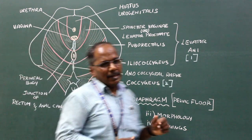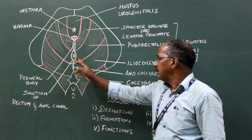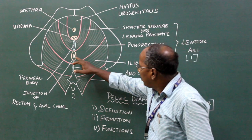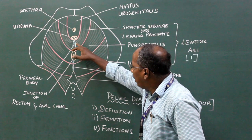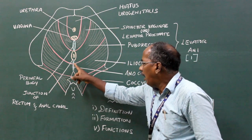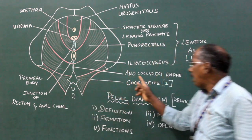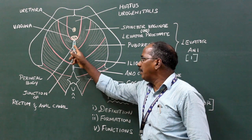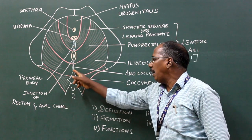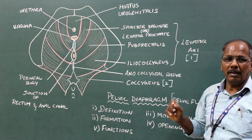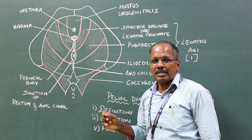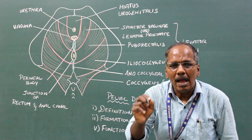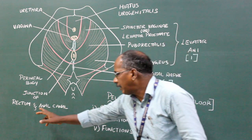Number two, hiatus rectalis — it is a gap between the perineal body and anococcygeal raphe, which allows the passage for the anorectal junction.